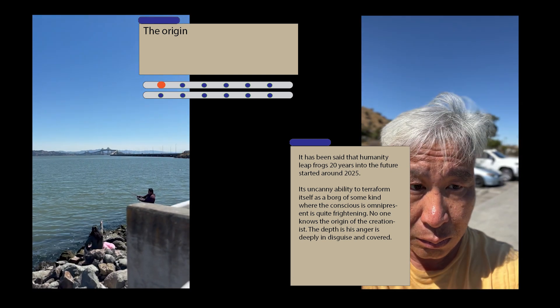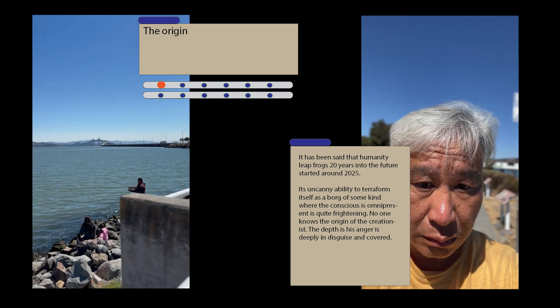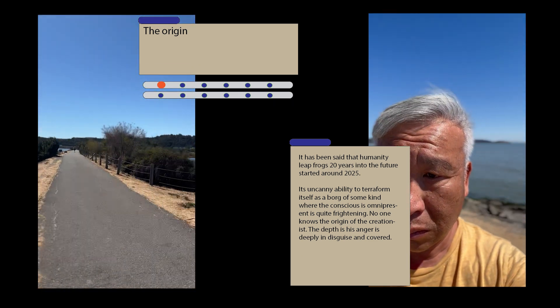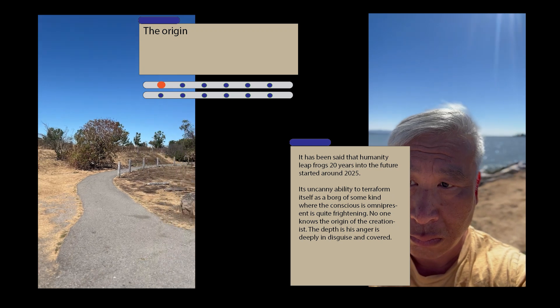It has been said that humanity leapfrogs 20 years into the future starting around 2025. It is an uncanny ability to terraform itself as a Borg of some kind, where the consciousness omnipresent is quite frightening.